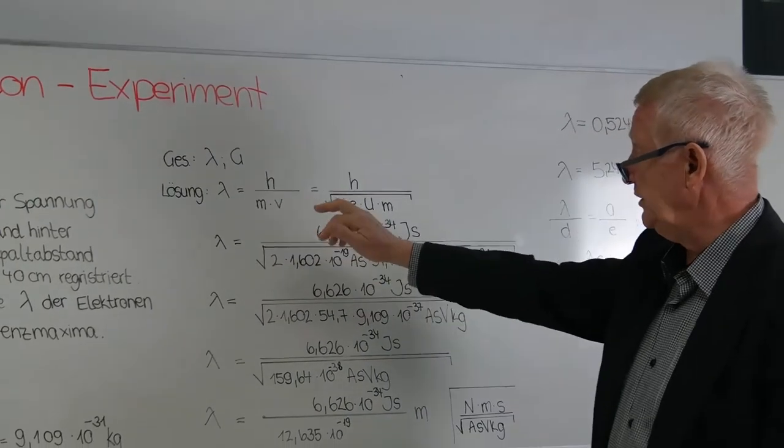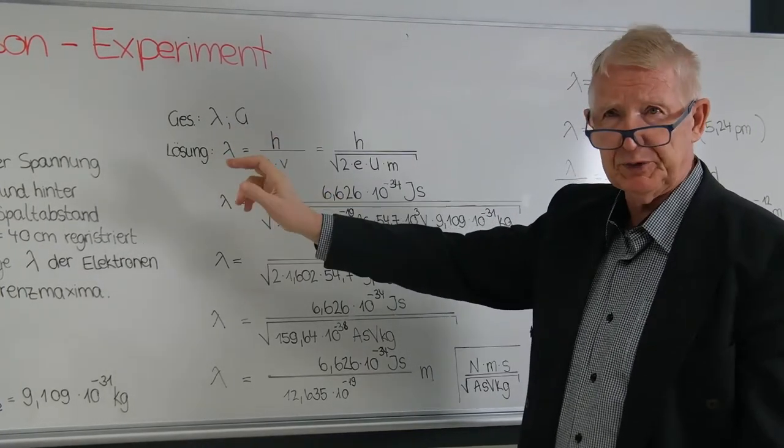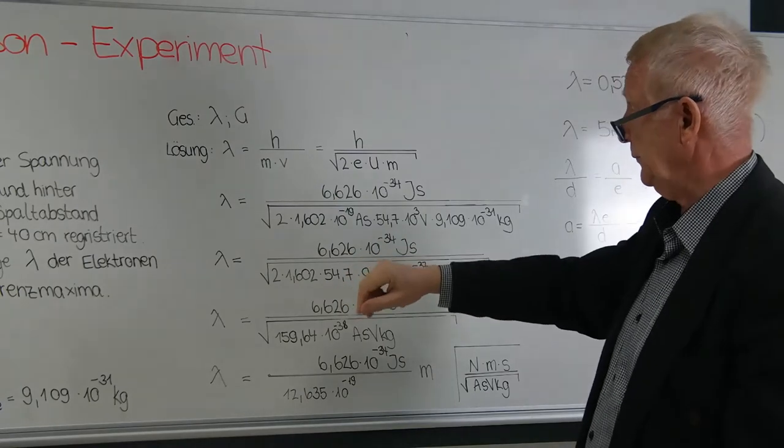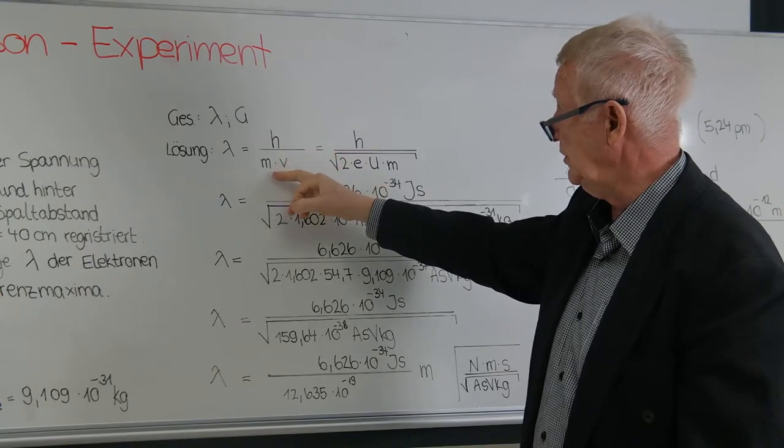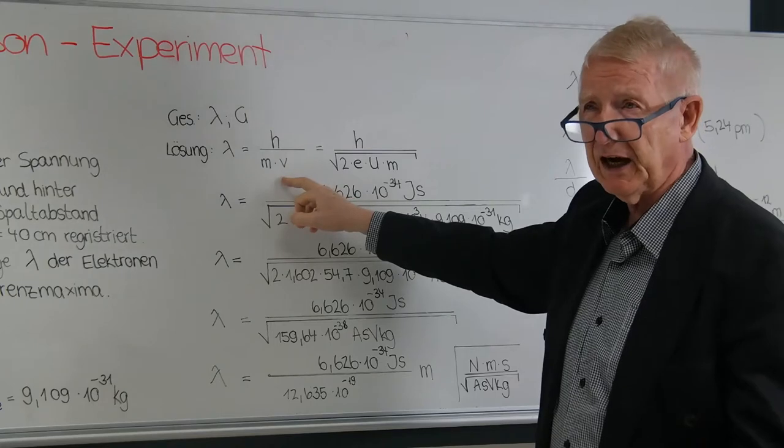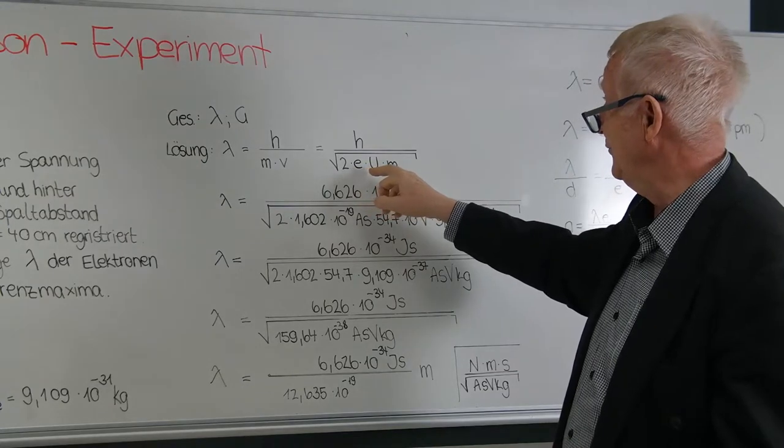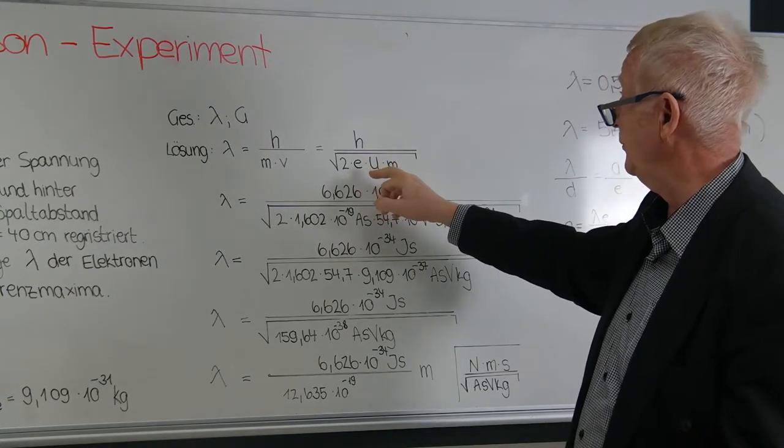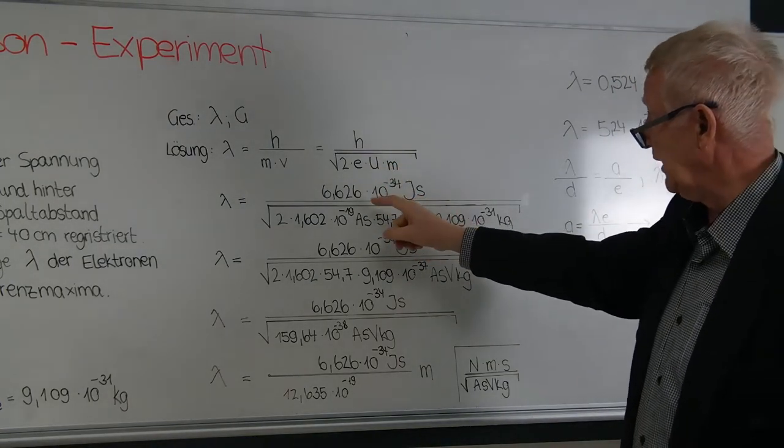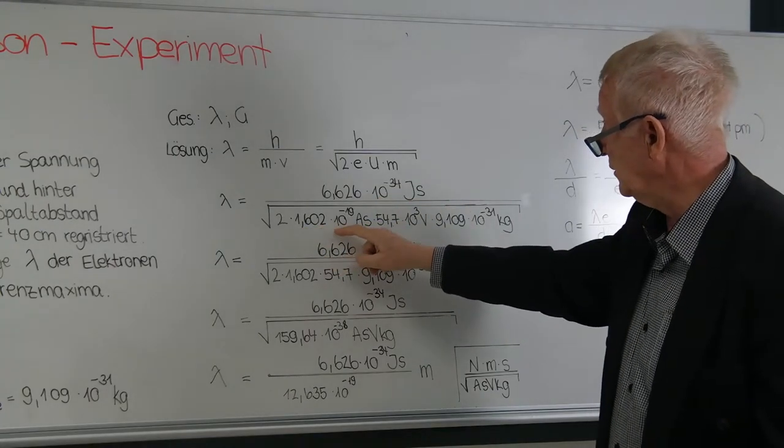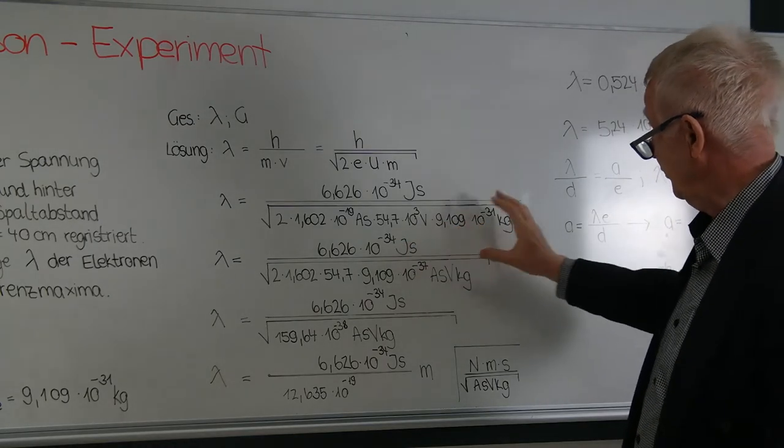For the calculation we need the wavelength and then the spacing to the individual maxima. Starting from the formula lambda = Planck's constant divided by mass times velocity. We don't have the velocity, Selina, so we use the formula h divided by the square root of 2 × E × U × M. We substitute the corresponding values: Planck's constant, here's the value for E, here's the value for M. Let's look at this carefully.